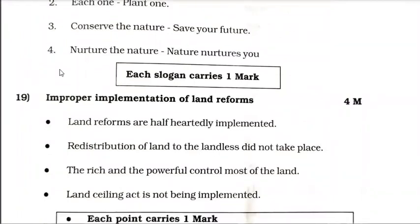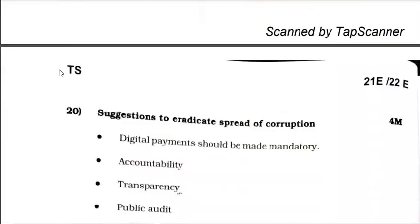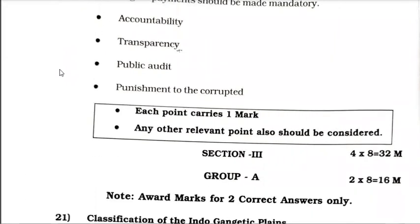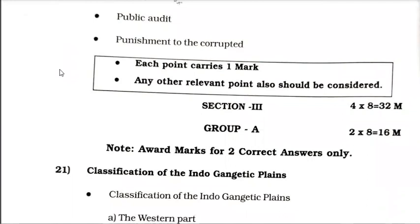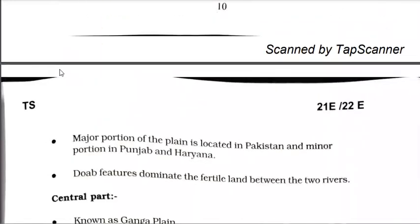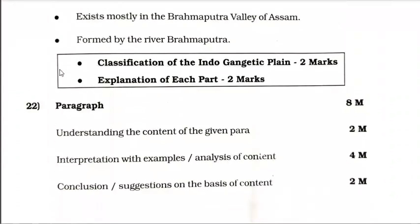For improper implementation of land reforms, each point carries 1 mark, and any other 4 relevant points should also be considered. Section 2 covers erratic spread of corruption — each point carries 1 mark and any other relevant points should also be considered. Section 3 has 8-mark questions — be very careful here. The distribution of marks for relevant answers, main headings, and subheadings is very important.